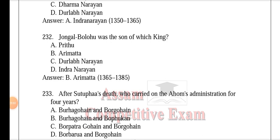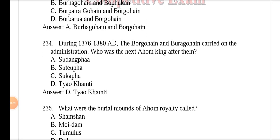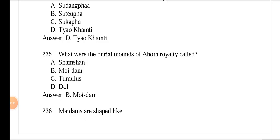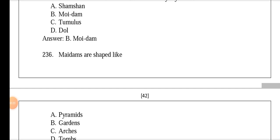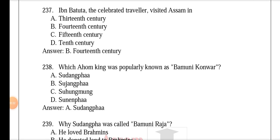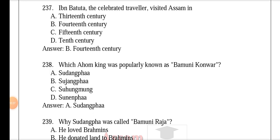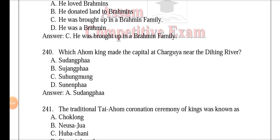Jongol Bolohu was the son of king Arimata. After Sukafa's death, the Ahom kingdom's administration was carried on for four years by Burha Gohain and Bor Gohain, during 1376 to 1380. The next Ahom king after them was Tyokhamti. The burial mounds of Ahom royalty are called Moidam — they were in the news recently and are shaped like pyramids. Ibn Battuta, the celebrated traveler, visited Assam in the 14th century. The Ahom king popularly known as Bamunikur was Sudangfa, because he was brought up in a Brahmin family.